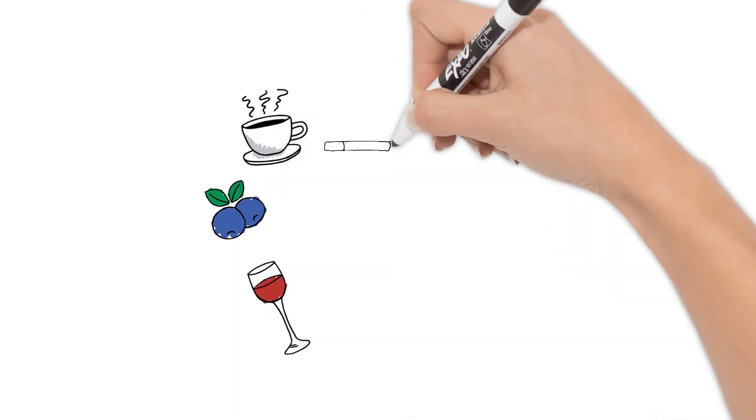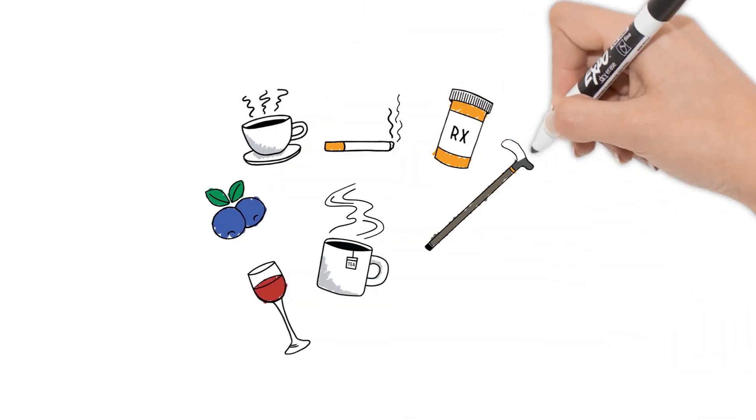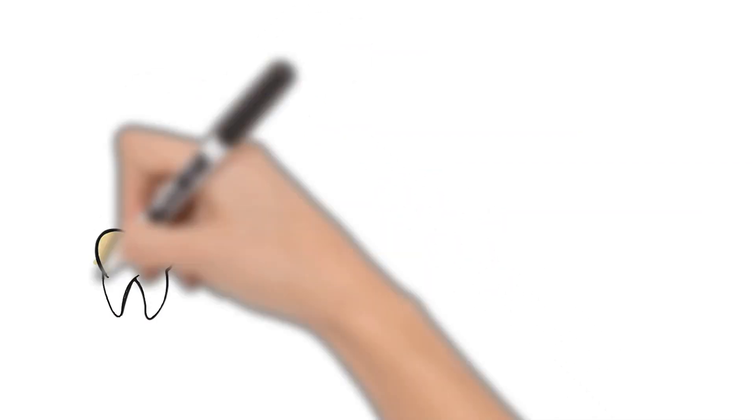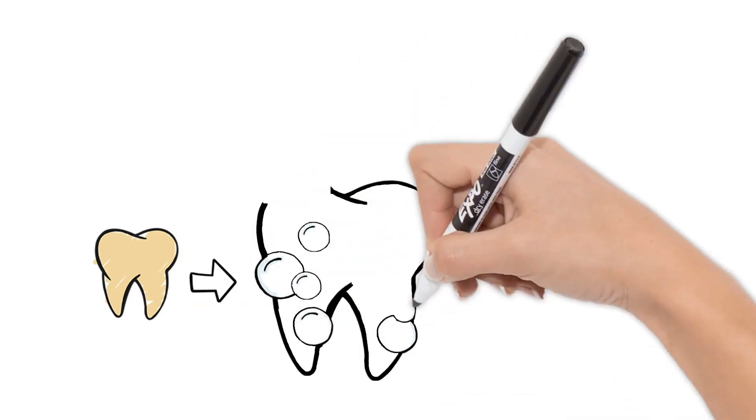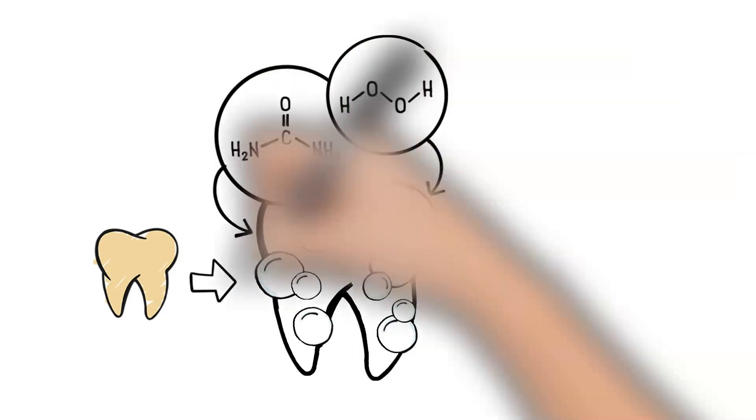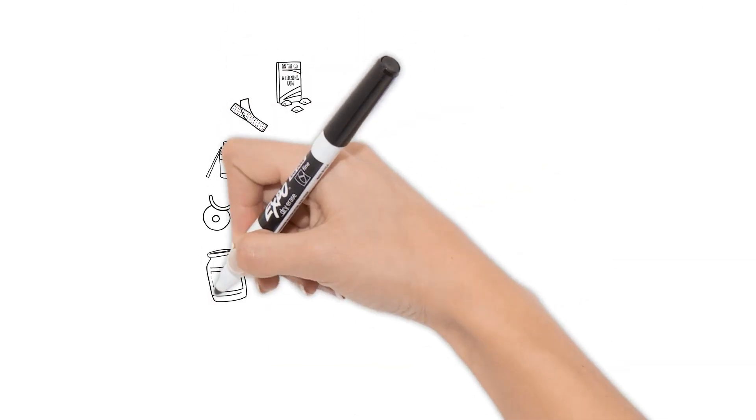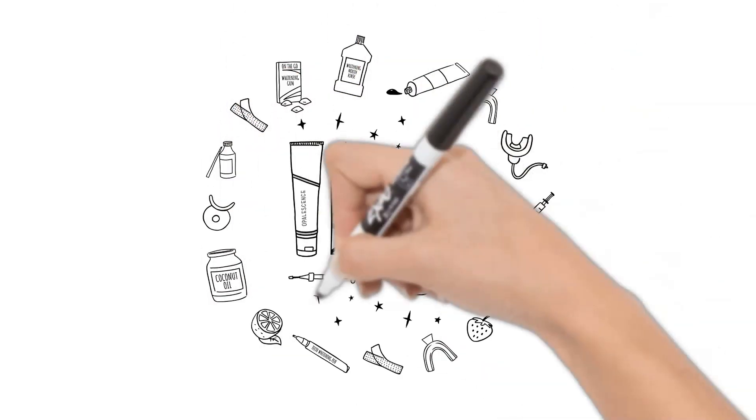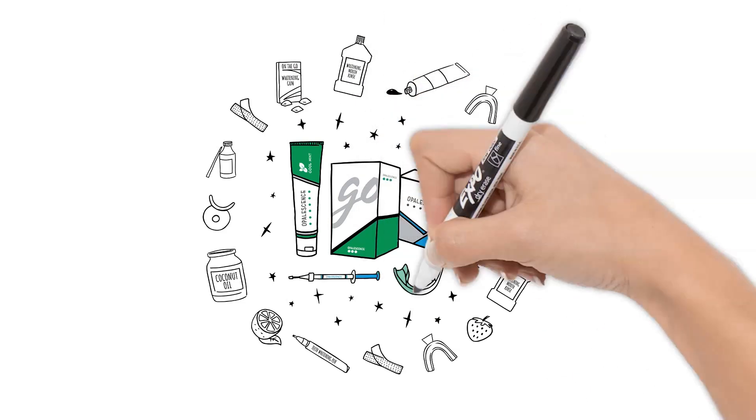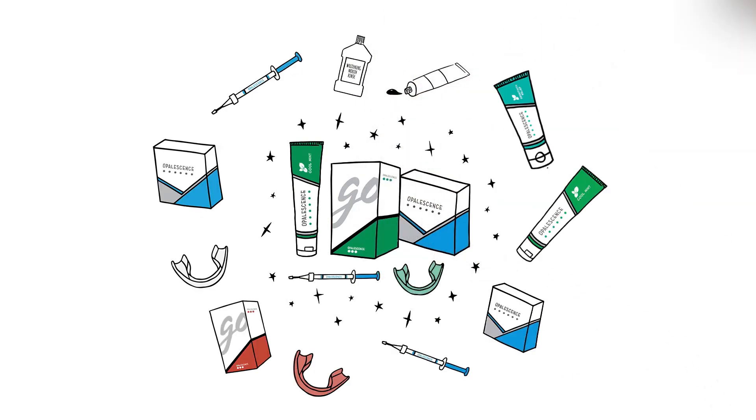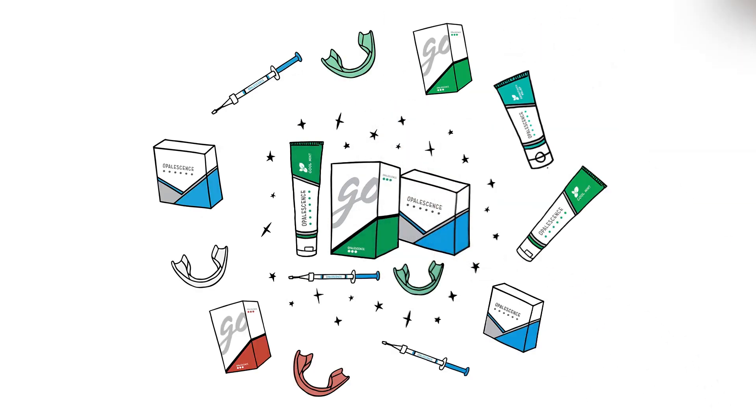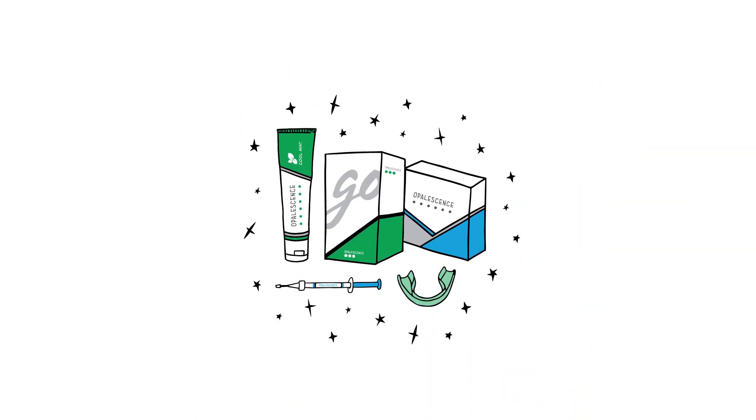In short, teeth stain or discolor due to diet, lifestyle, genetics, and age. Opalescence whitening safely whitens your teeth with hydrogen or carbamide peroxide, oxidizing discolorations, and brightening the teeth. There are several whitening products out there, but many are fads created to make a quick buck. So, be sure to choose a teeth whitener that puts your oral health first and still gives you outstanding results.